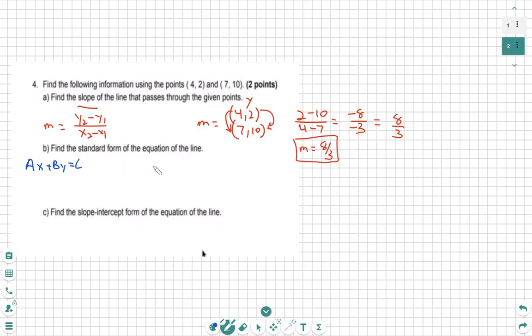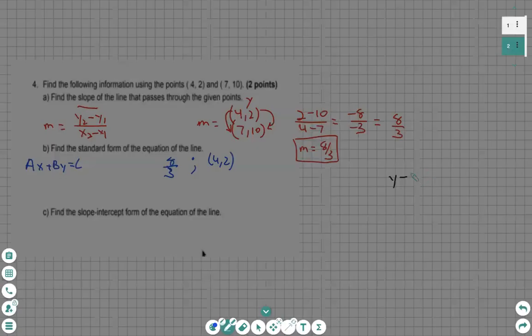So I'm going to put this into point-slope form first. We're going to take the slope and we're going to take the point. Let's recall that our point-slope formula is y minus y1 equals m times x minus x1,